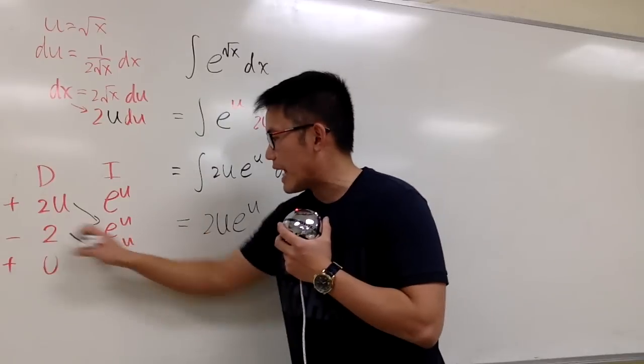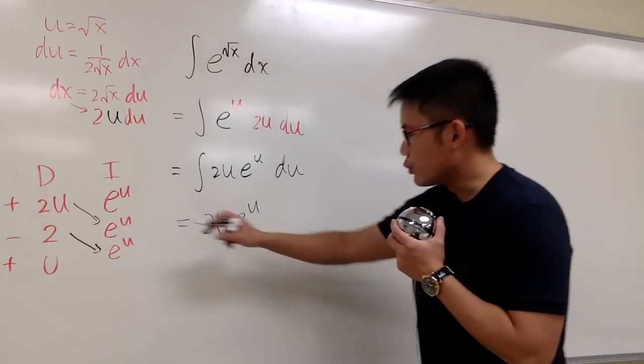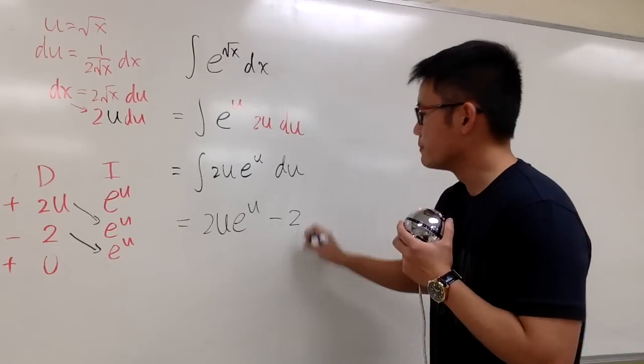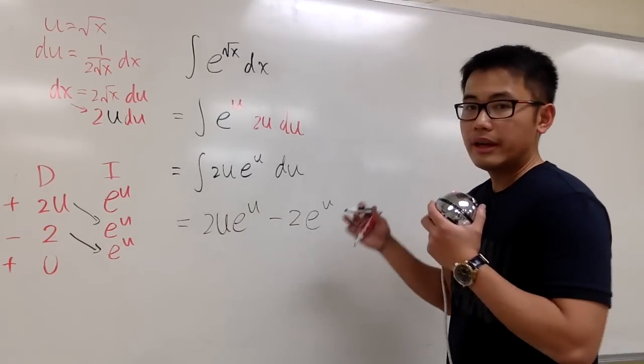And remember, the product of the diagonals, along with the sign, is the answer already. So, we have the minus 2 times e to the u. And then we are done.